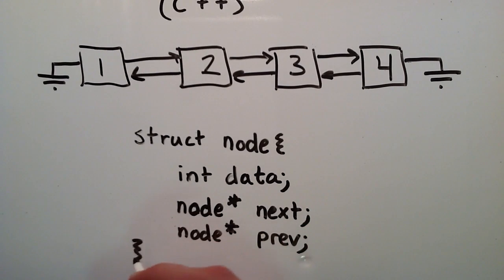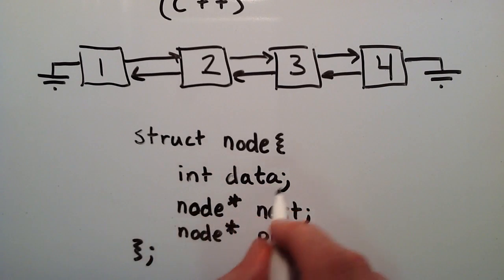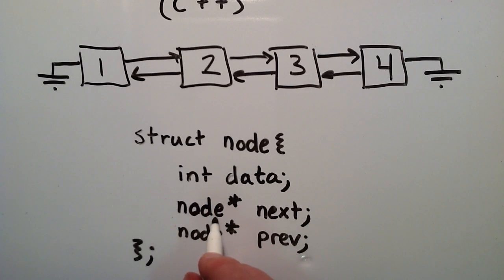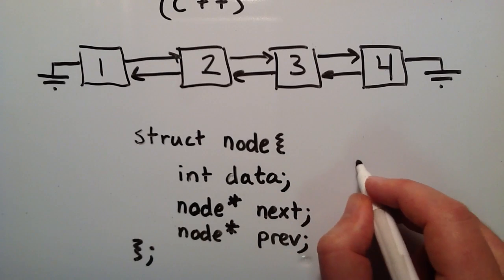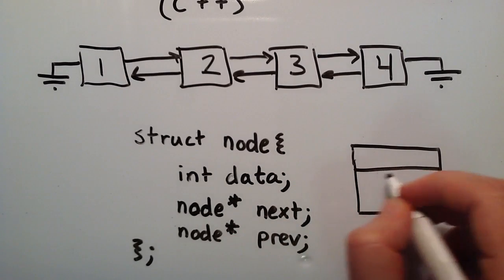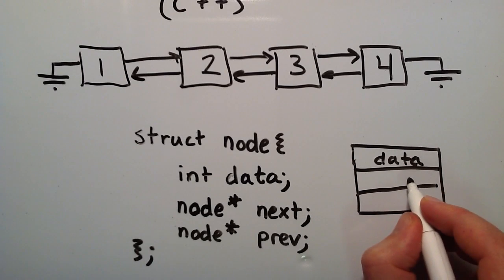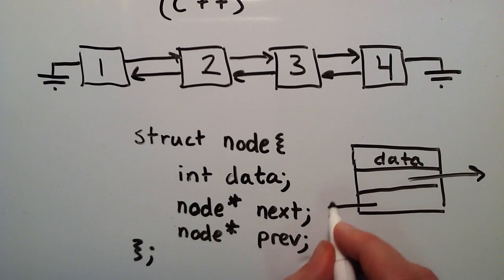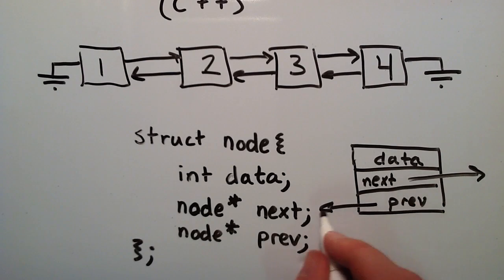Then we end our struct with a closing curly brace and a semicolon. So now we've created this node object that not only holds an integer value, but it also holds two node pointers. One of the node pointers is called next and the other is called prev. So whenever we use the word node in our program, our program knows we're referring to this object. We've got the data section which holds an integer, and then we've got these two other partitions — one is the next pointer and one is the prev pointer.